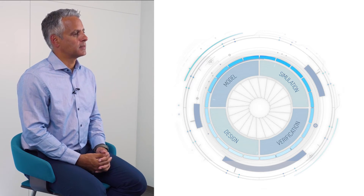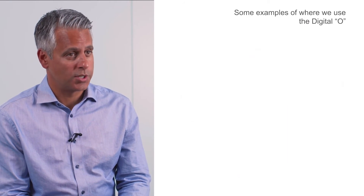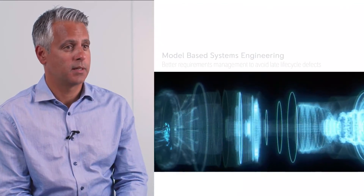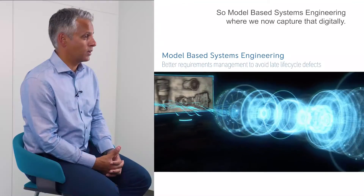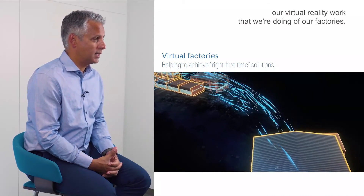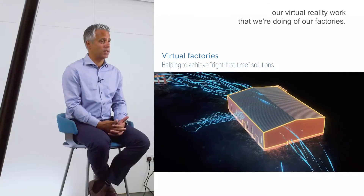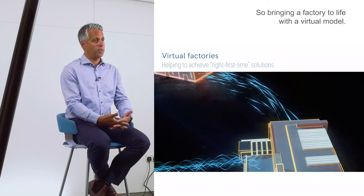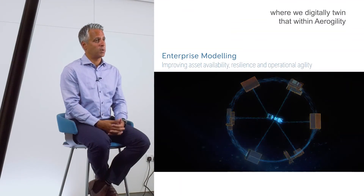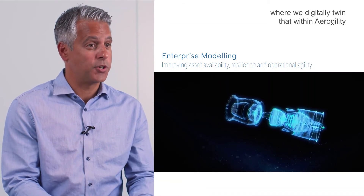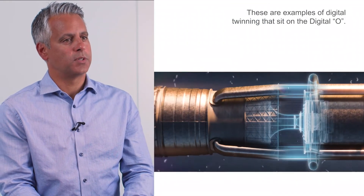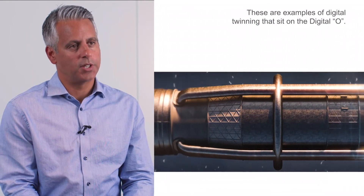Some examples of where we use the digital O and digital twinning would be our MBSE — model-based systems engineering — where we now capture requirements digitally. Another example is virtual reality work on our factories, bringing a factory to life with a virtual model. Another example is the operation of our customers, where we digitally twin their enterprises within Air Agility, as well as our own. These are all examples of digital twinning that sit on the digital O.